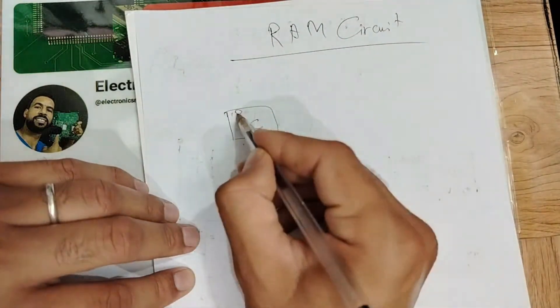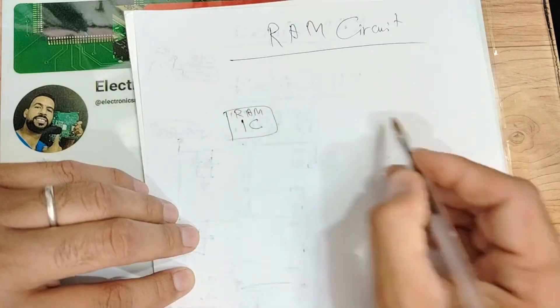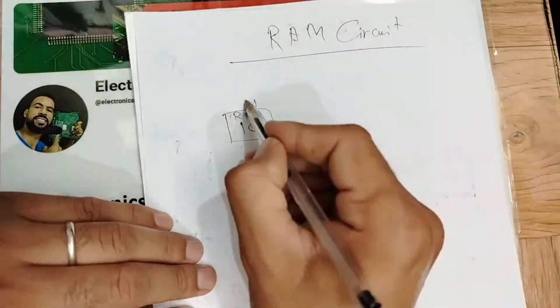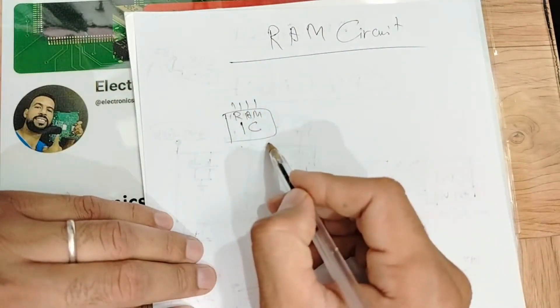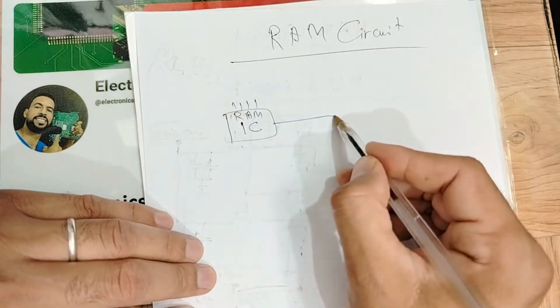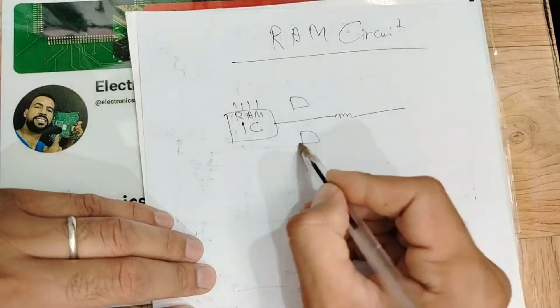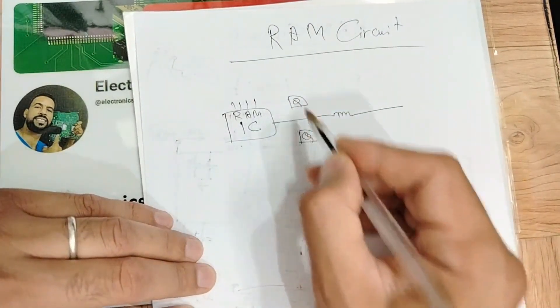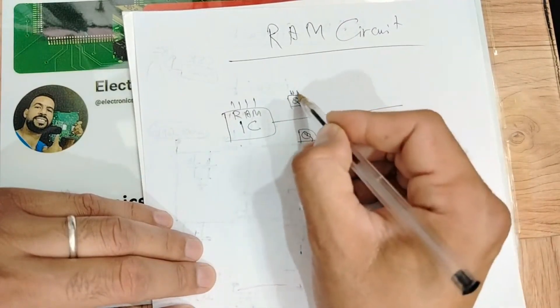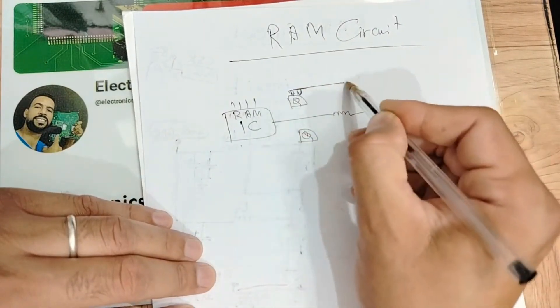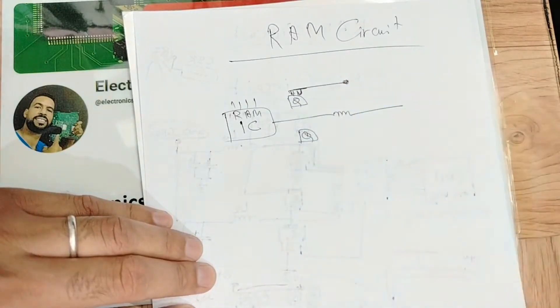We have the RAM IC. It will receive basically the inputs and the output will be applied to basically 12 MOSFETs. The same working principle.